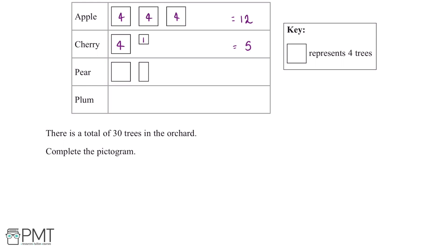In the pear row, we again have another large square which represents four trees. And then we have a rectangle which is half the size of the larger square. If the larger square represents four trees, then this rectangle will represent half the number of trees, which is two. Adding these together, four plus two gives us six pear trees.